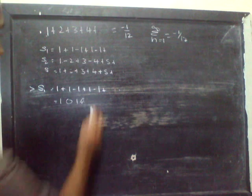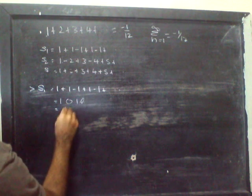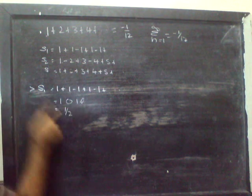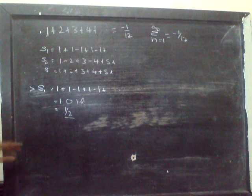So we will take the average. That means 1 plus 0 over 2, which is 1/2. So S1 is 1/2. Now I'm moving on.